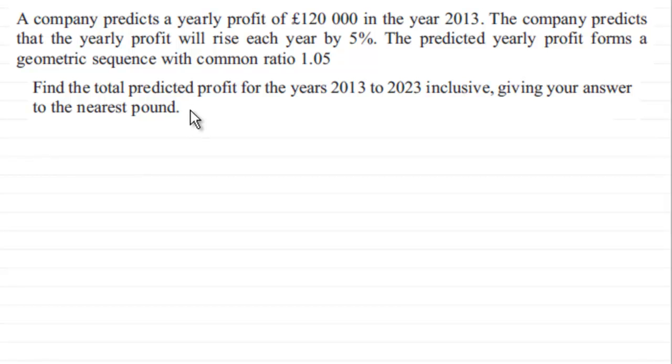Okay welcome back if you had a go. Just briefly though before we start let's just recap. We've got a company predicts a yearly profit of £120,000 in the year 2013 and the company predicts that the yearly profit will rise each year by 5%. The predicted yearly profit forms a geometric sequence with common ratio 1.05. So we've got to find the total predicted profit for the years 2013 to 2023 inclusive, giving your answer to the nearest pound.